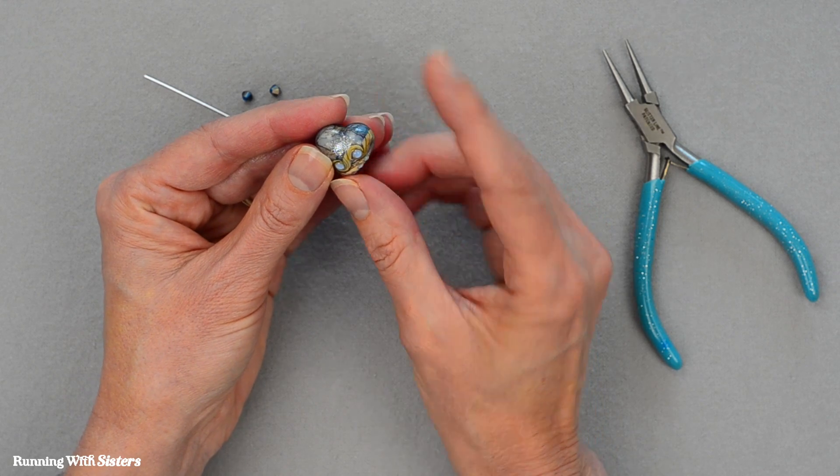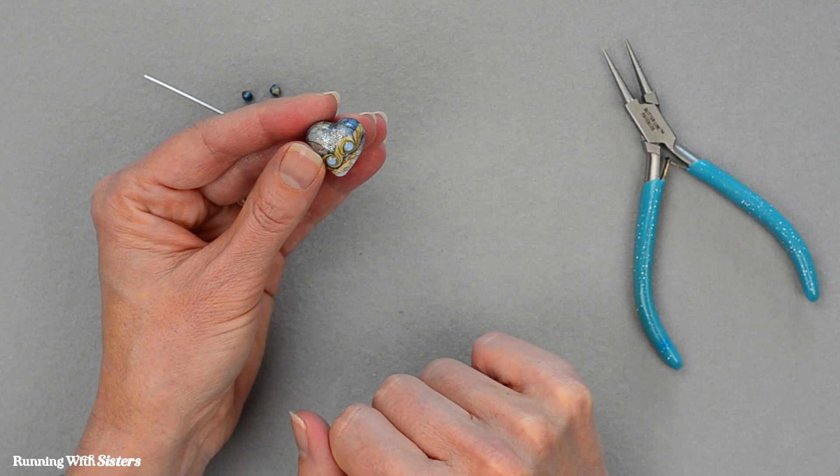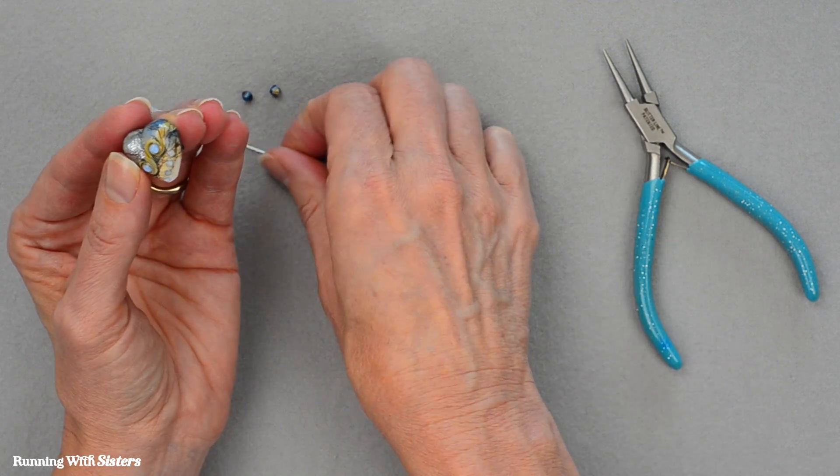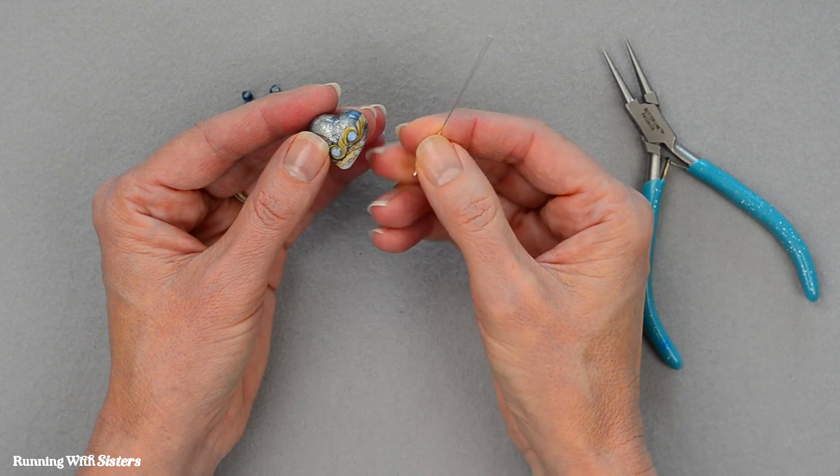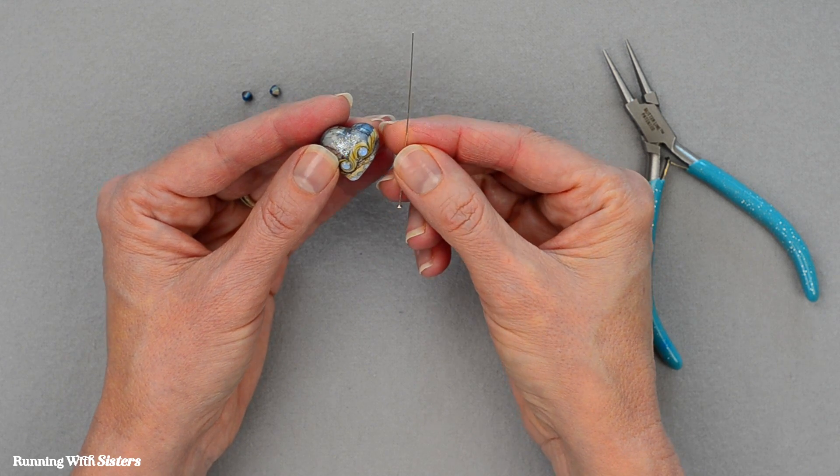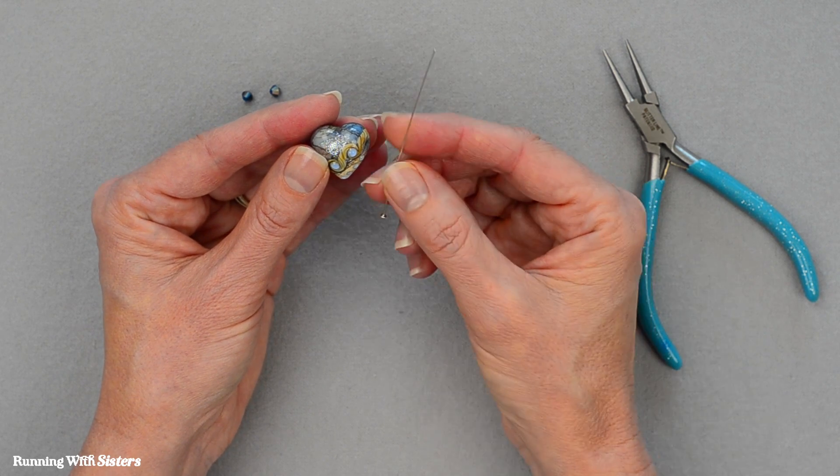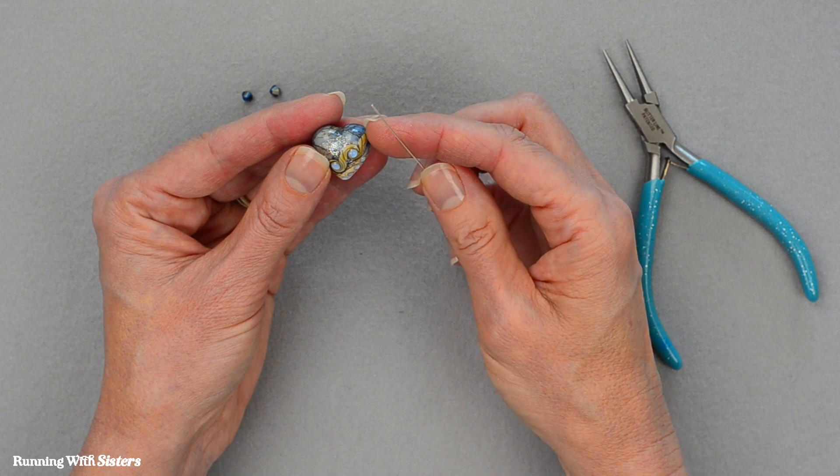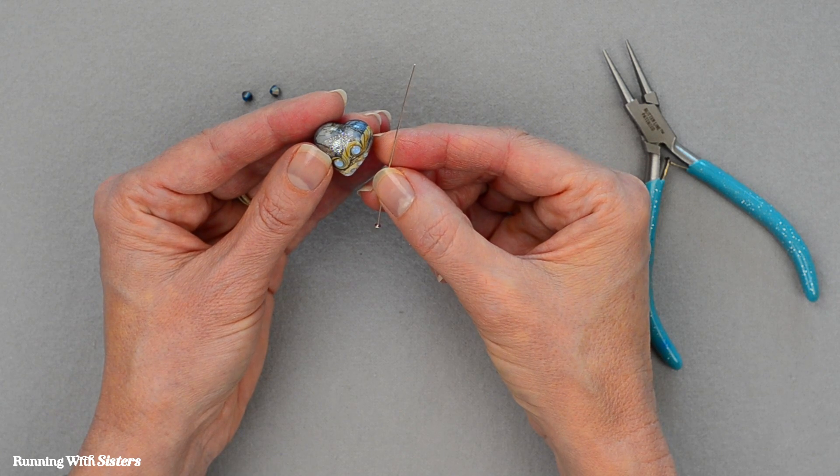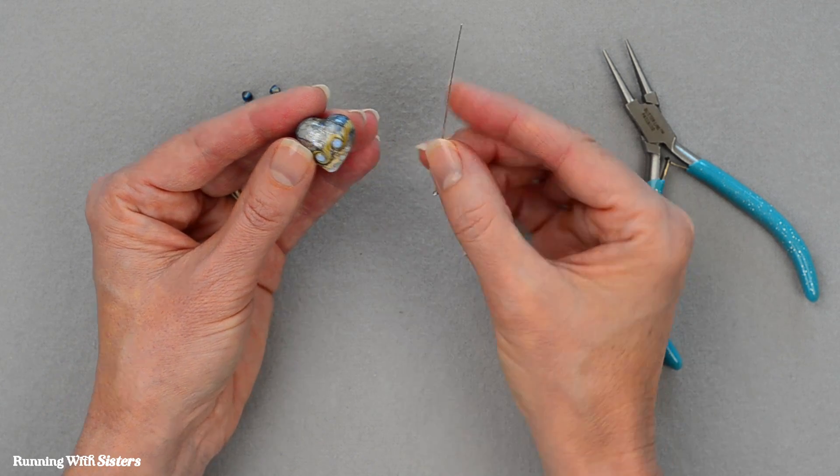So instead we're going to show you how we can turn this into a pendant using just a simple wrapped loop. We're going to start with a head pin and this head pin is slightly longer than a regular head pin. It's two and a half inches long and we chose that because this particular bead is long from top to bottom. You might be able to use a regular size head pin for your bead if your bead is shorter than this.